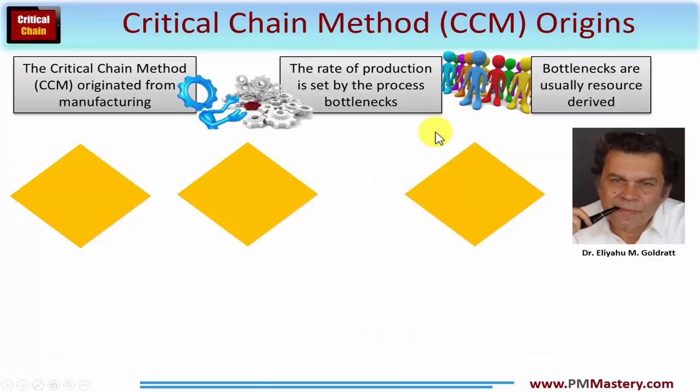The individual who created the critical chain method is Dr. Eliyahu Goldratt. He brought the world's attention to the critical chain method by writing, unusually, a business novel about it. Since then, many other individuals have built upon and expanded some of his ideas to form the latest understanding of the critical chain project management method.